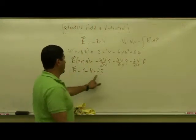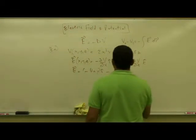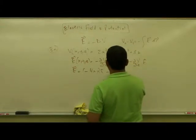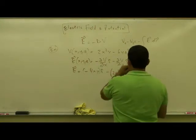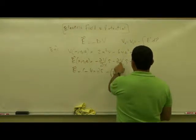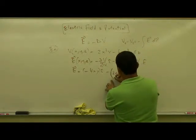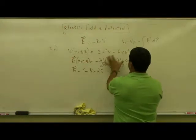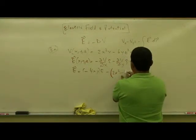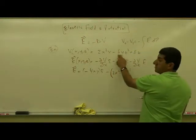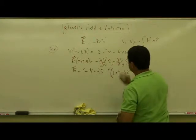The electric field has a component in the x-direction. For the y-component, we take minus partial V over partial y. The derivative of 2x²y with respect to y is 2x², and the derivative of −6yz² with respect to y is −6z². Be careful with signs here — put parentheses to keep track.